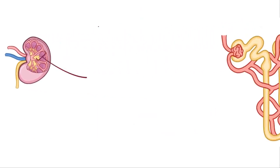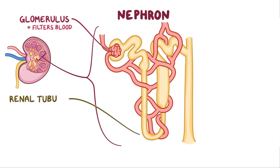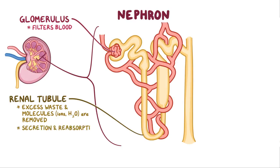The basic unit of the kidney is called a nephron, and each nephron is made up of a glomerulus which filters the blood. The filtered content goes through the renal tubule, where excess waste and molecules such as ions and water are removed through an exchange between the tubule and the paratubular capillaries. The renal tubule plays a huge role in secretion and reabsorption of fluid and ions such as sodium, potassium, and chloride, in order to maintain homeostasis.